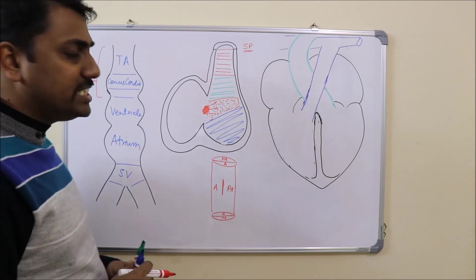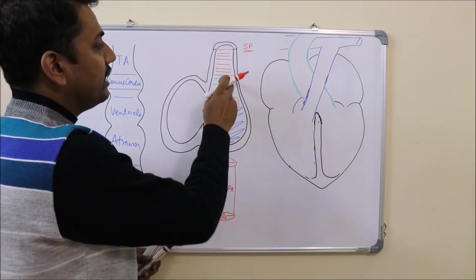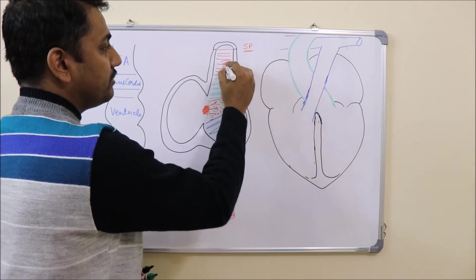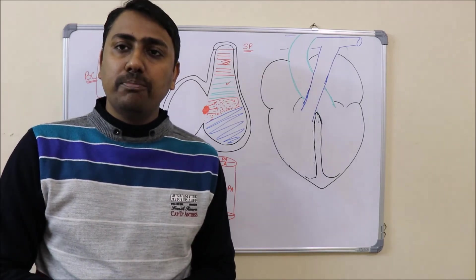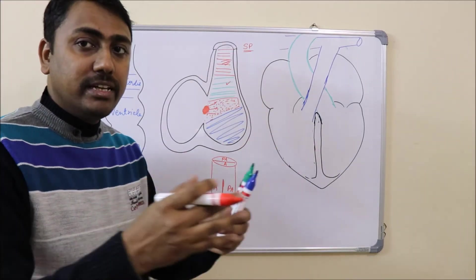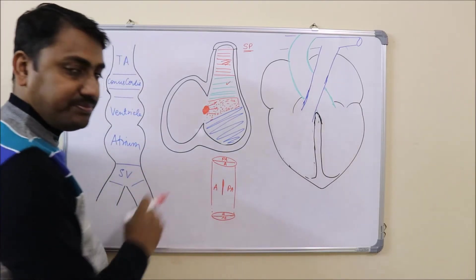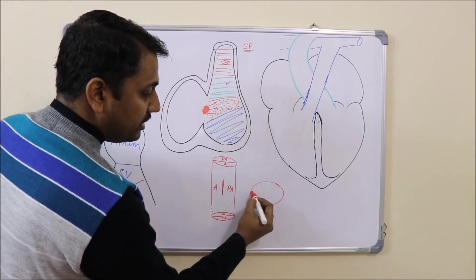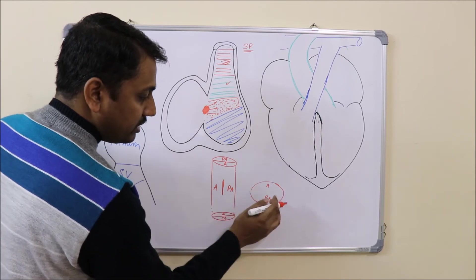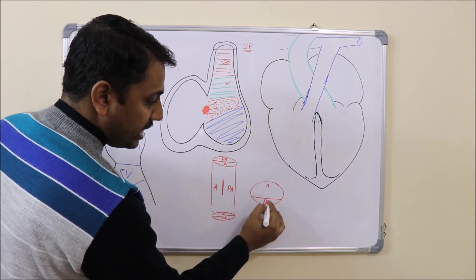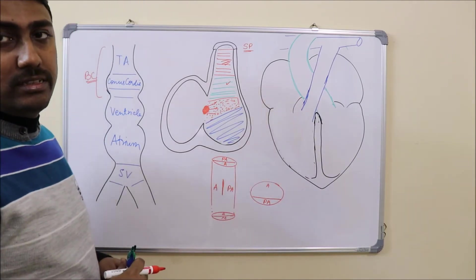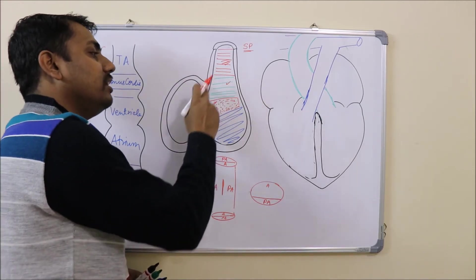In Tetralogy of Fallot, there is anterior displacement of the conotruncal septum — that is, both the bulbar septum and the truncal septum together, also known as the aorticopulmonary septum. This entire conotruncal septum is anteriorly displaced. Looking at the lower part of the channel: normally there is a pulmonary channel and an aortic channel, but if this septum is anteriorly displaced, the diameter of the pulmonary artery narrows down and the aorta becomes huge. This displacement is particularly at the level of the conal septum.